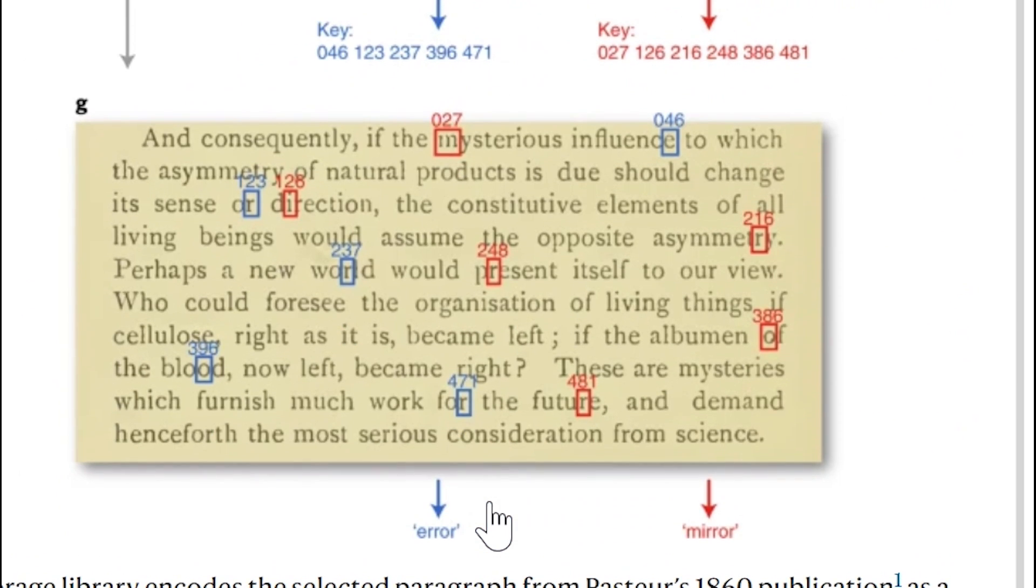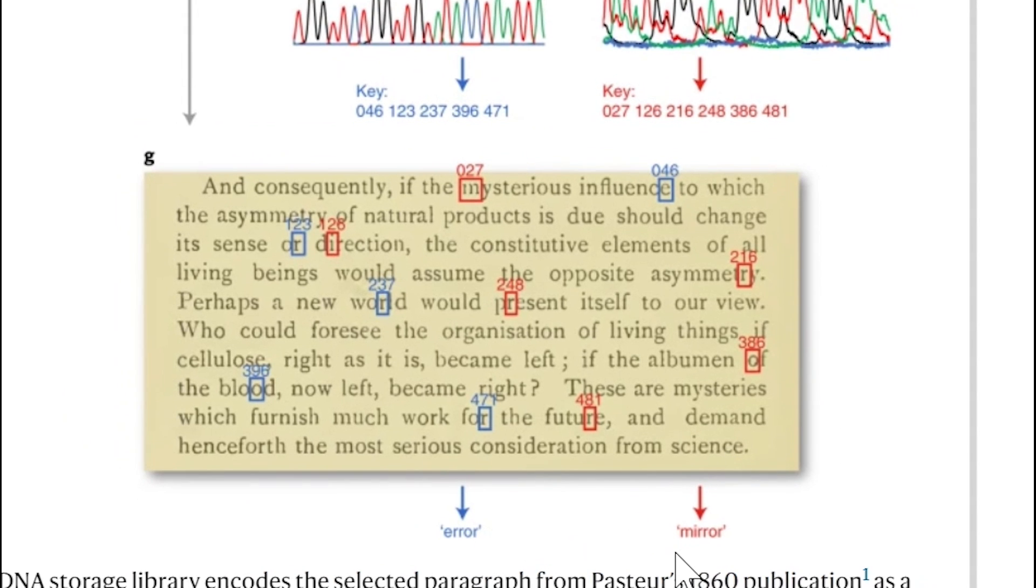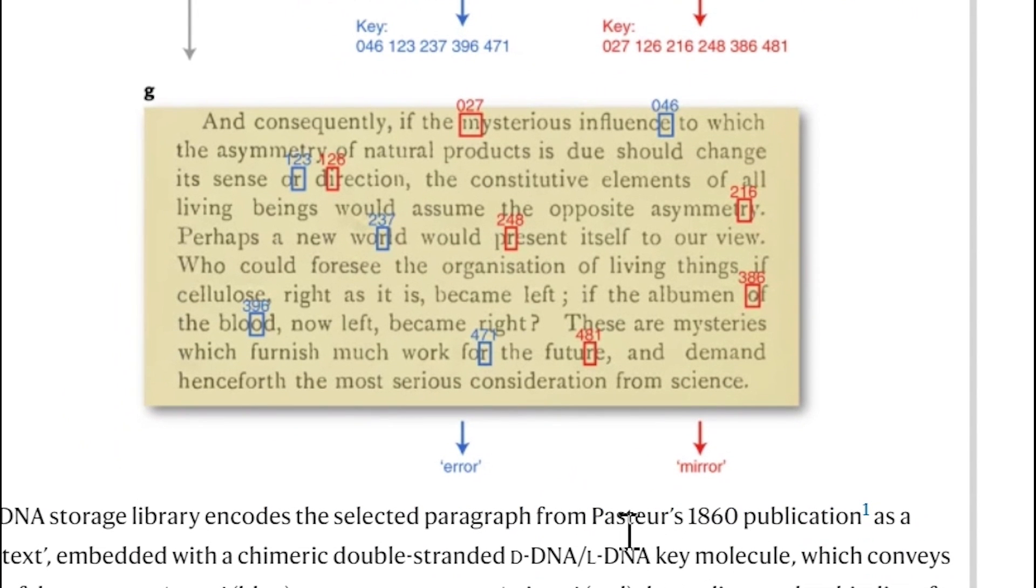And so if only the D-DNA part was sequenced, it would reveal the false message, error, whilst using the mirror image method of sequencing, it would reveal the secret message, mirror.